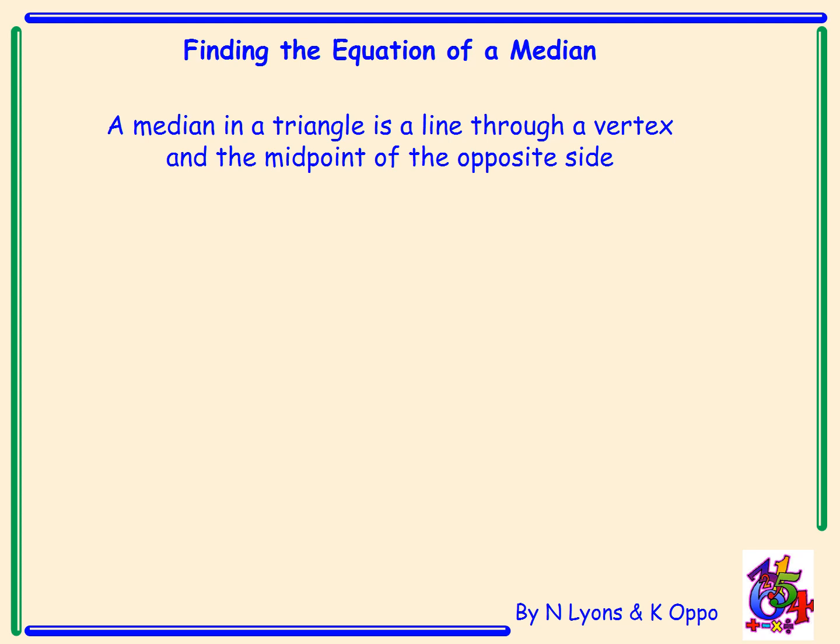A median in a triangle is a line through a vertex and the midpoint of the opposite side. We can see from this diagram that the median of this triangle is the line BM and it hits the middle of the side AC.